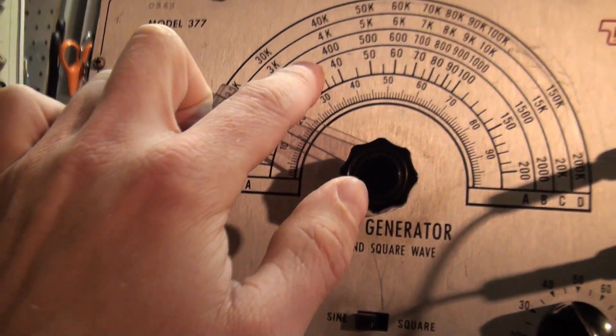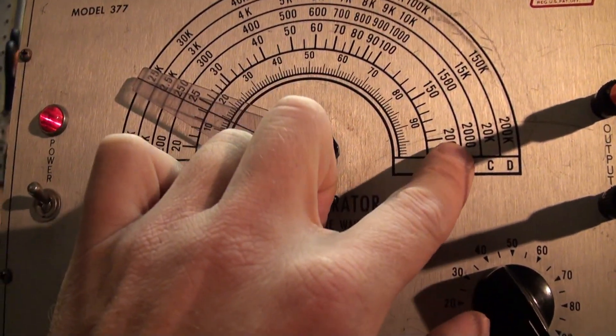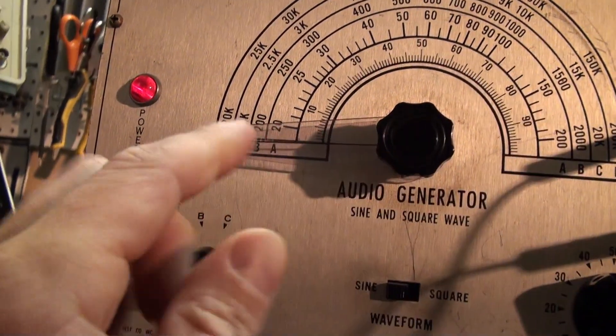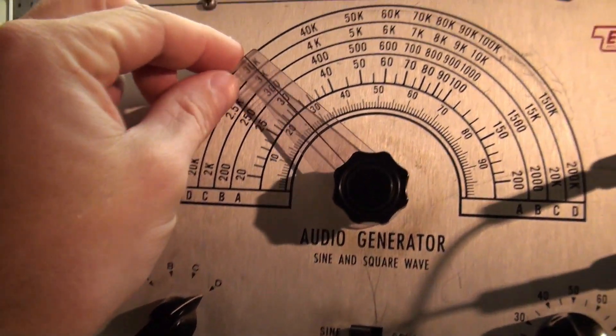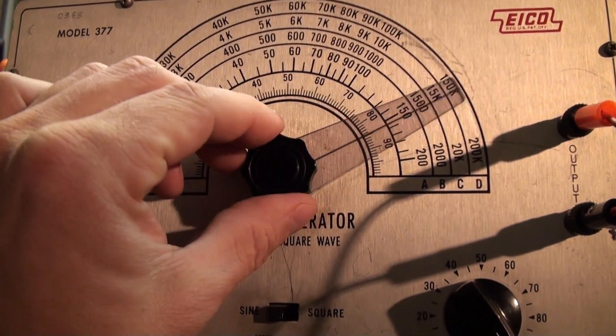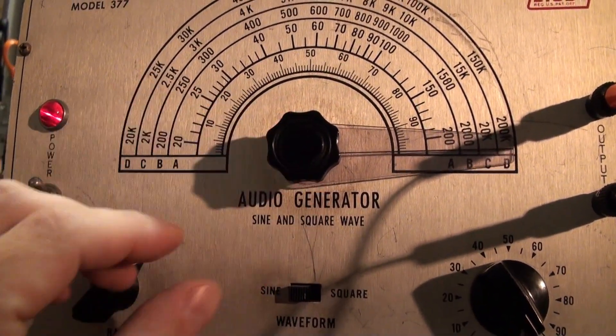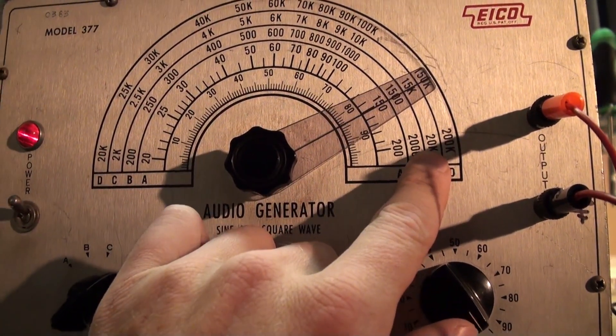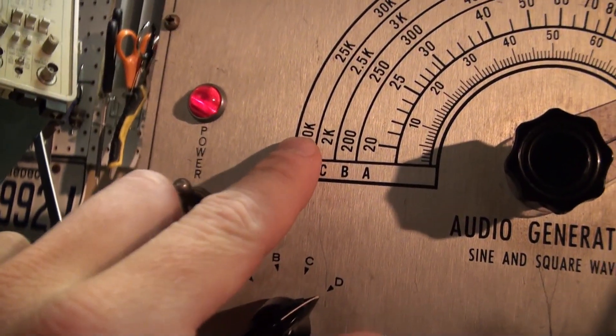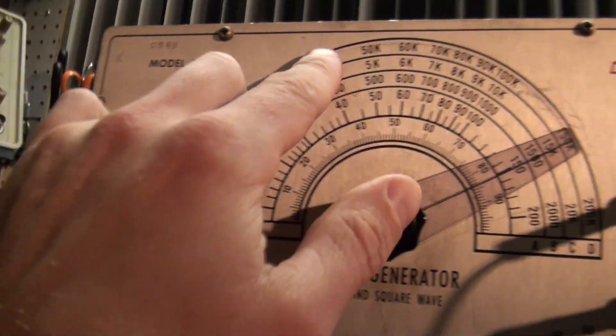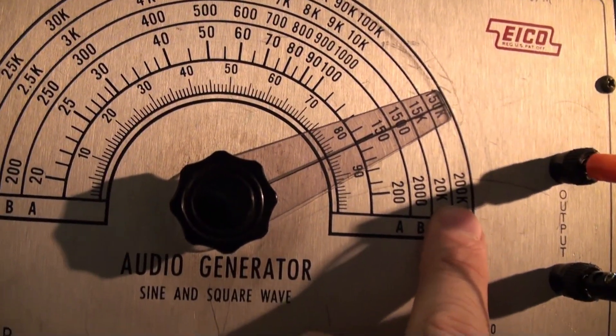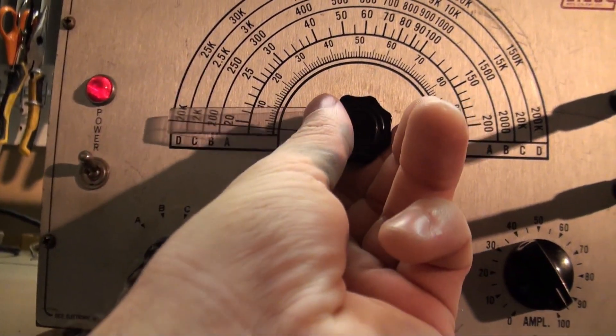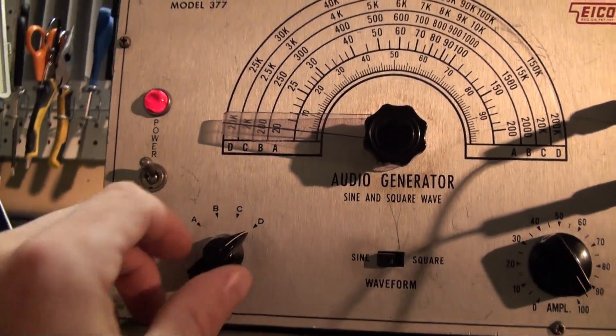And then band B is from 200, let's see, all the way to 2000 cycles per second. Band C is from 2000, because K means 1000, all the way up to 20,000 cycles per second, or 20K. And then band D gets really crazy, we go 20,000 cycles all the way up to 200,000 cycles per second right there. So this thing goes really low and pretty high as far as the audio spectrum is concerned.